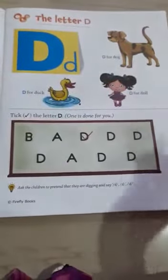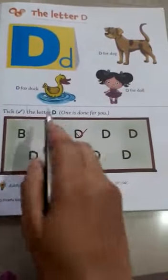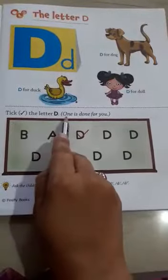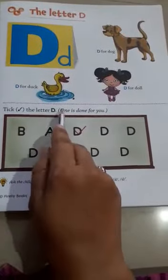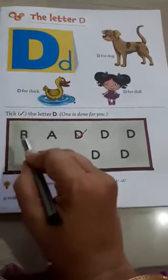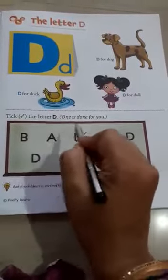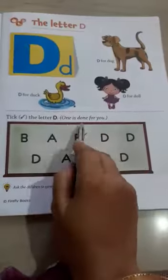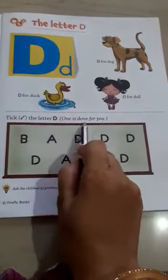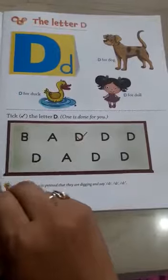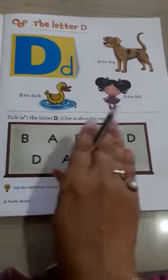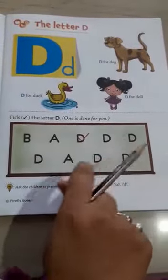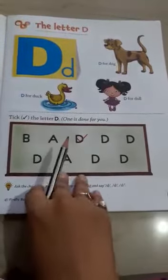Now we will do exercise. Tick the letter D. Okay kids, so what do we have to do? We have to tick the letter D. The one is done for you. So look here, see how D has been ticked. Now we have to find the letter D.